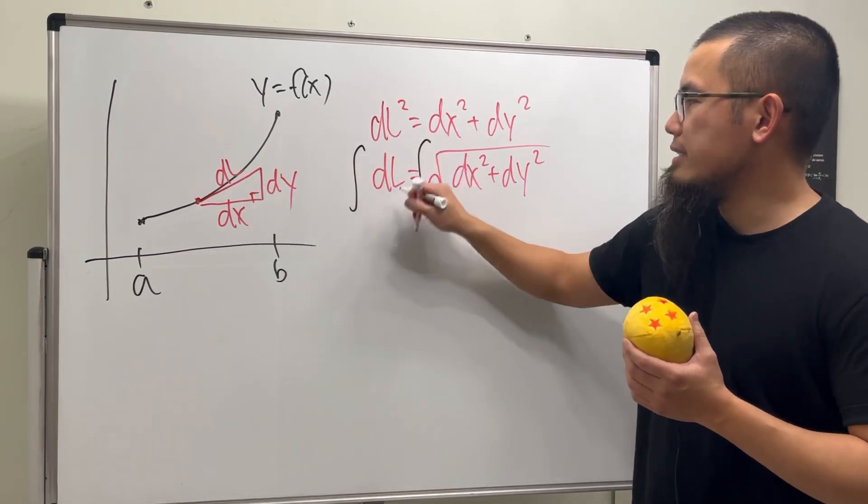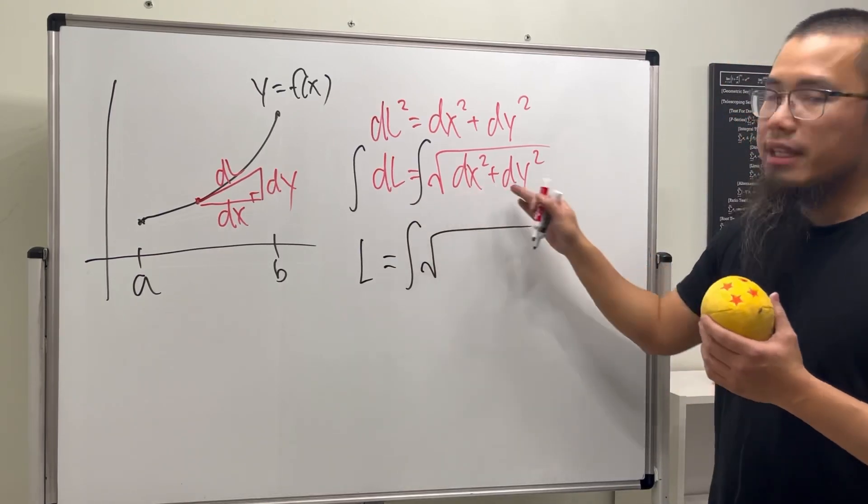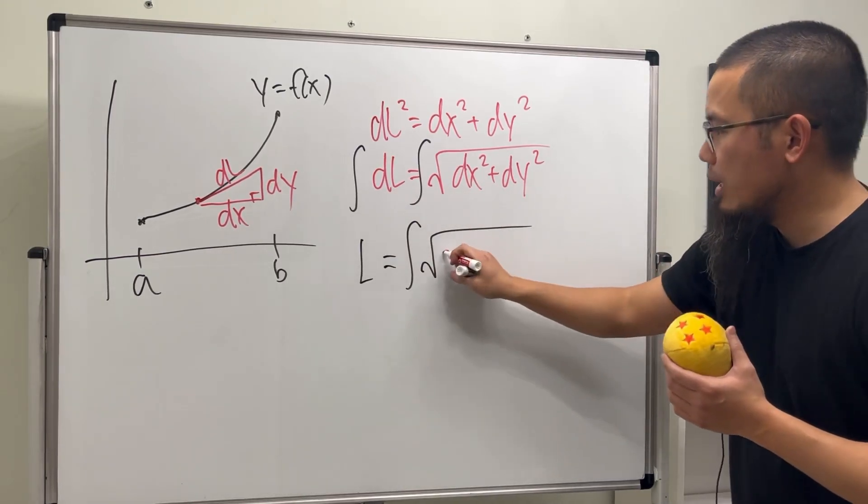And now we are just going to integrate both sides, so we can get the L, and this is going to be the integral of the square root. And right here, we are going to factor out the DX squared, so let me put it down right here.